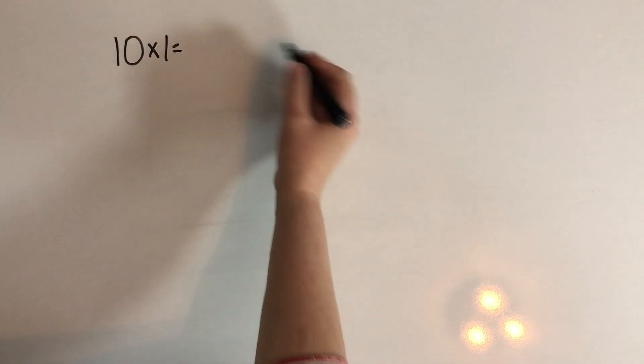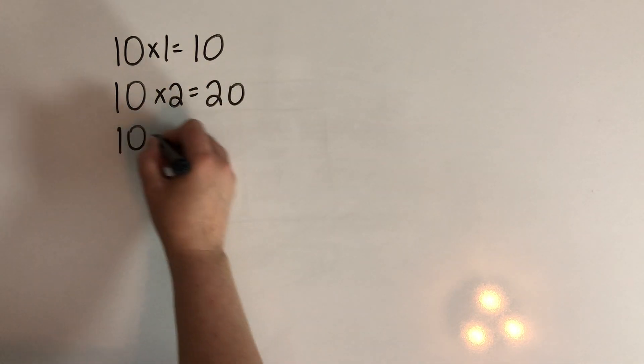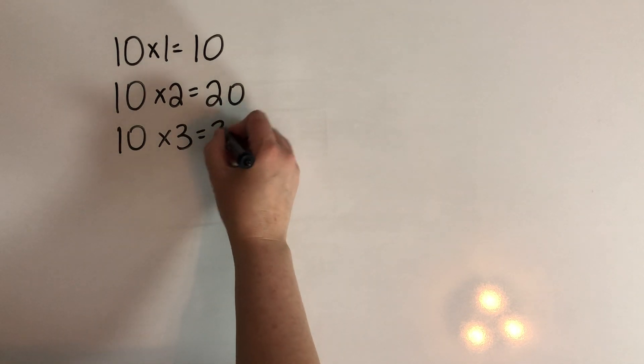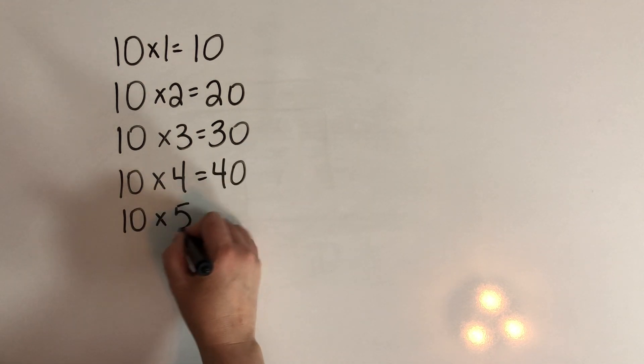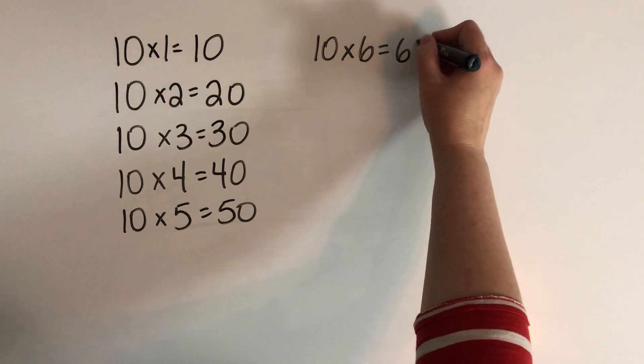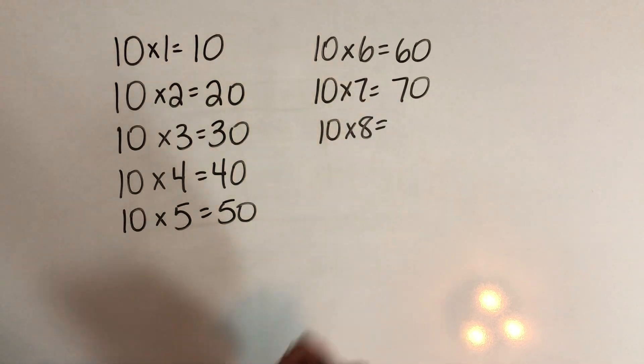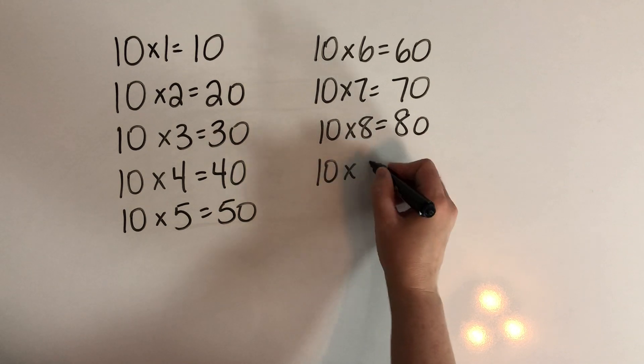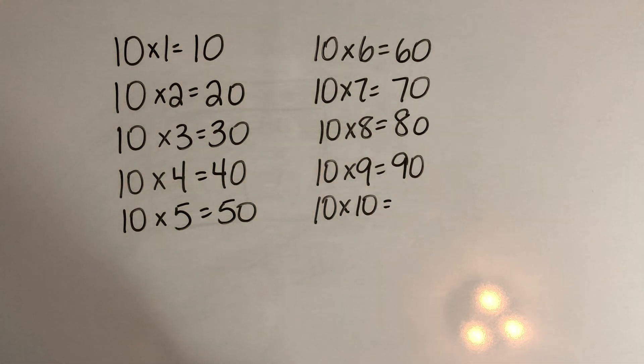Okay, so let's go through the 10s facts. So you can say them with me. 10 times 1 is 10. 10 times 2 is 20. 10 times 3 is 30. 10 times 4 is 40. 10 times 5 is 50. 10 times 6 is 60. 10 times 7 is 70. 10 times 8 is 80. 10 times 9 is 90. And our last one, 10 times 10 is 100.